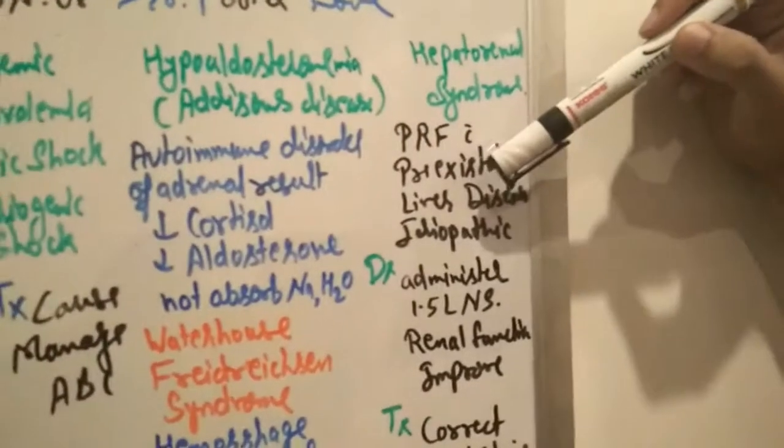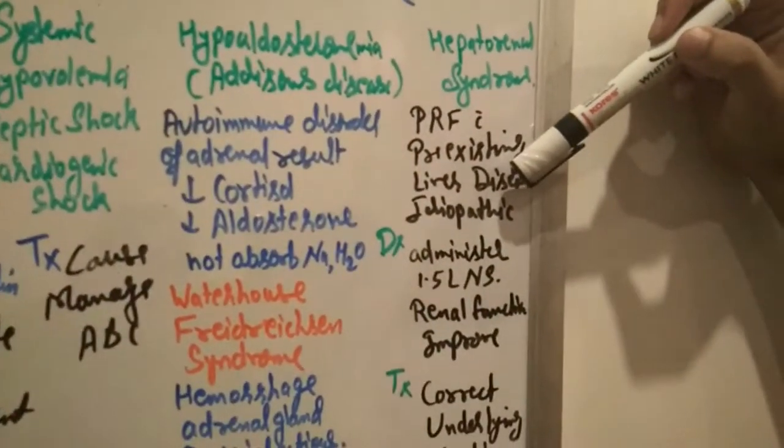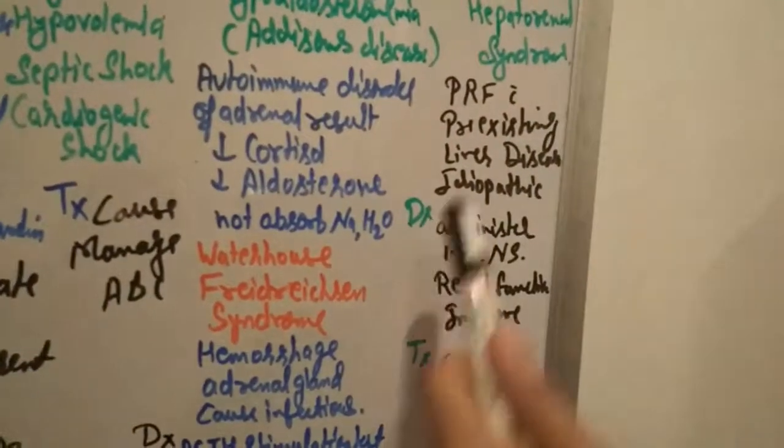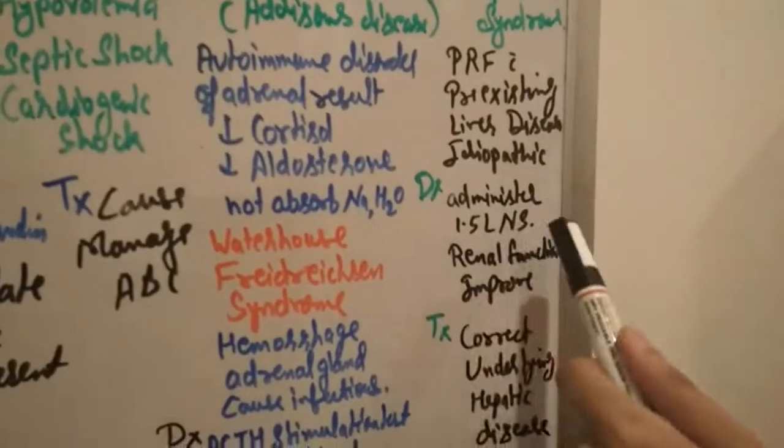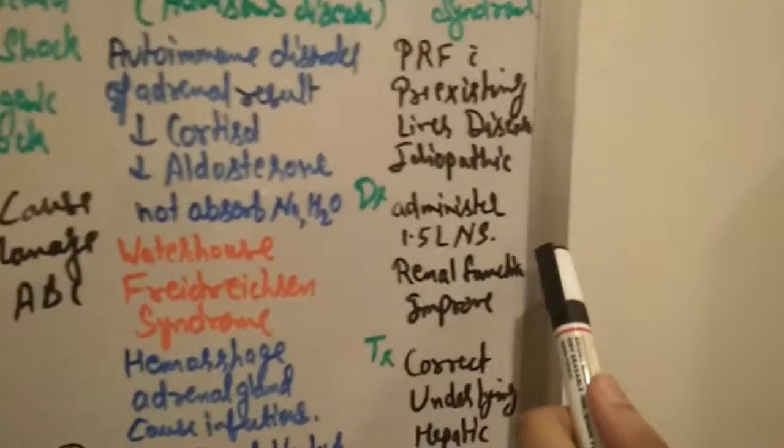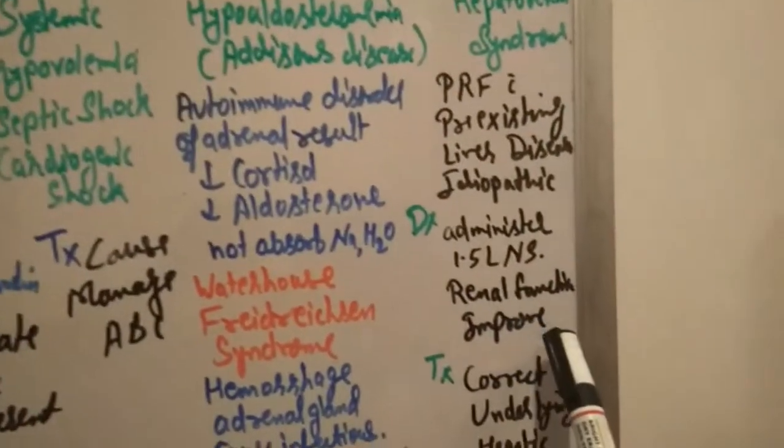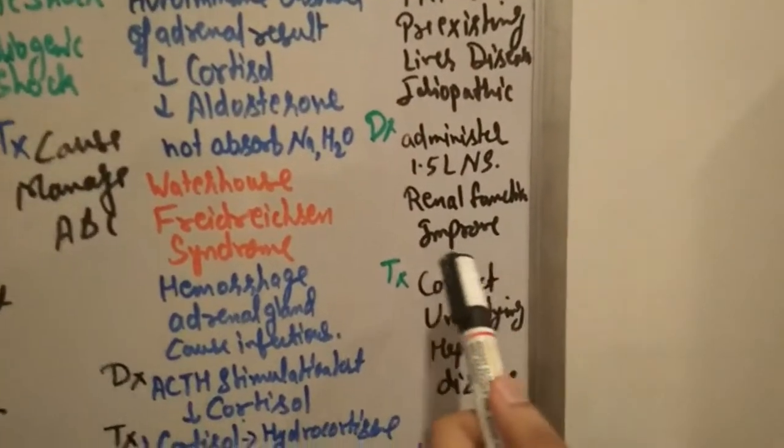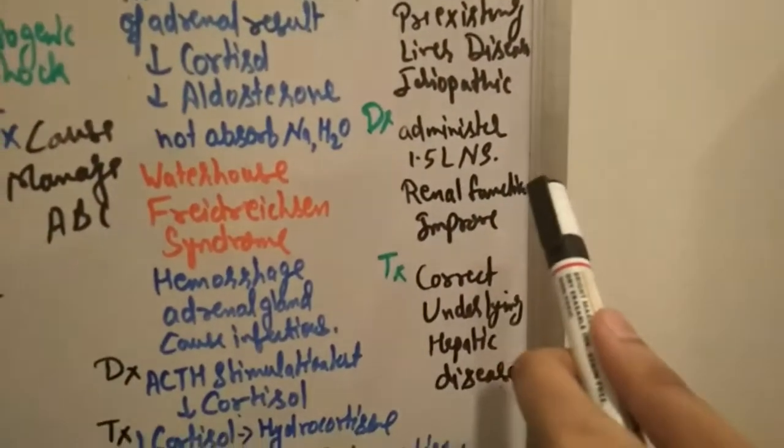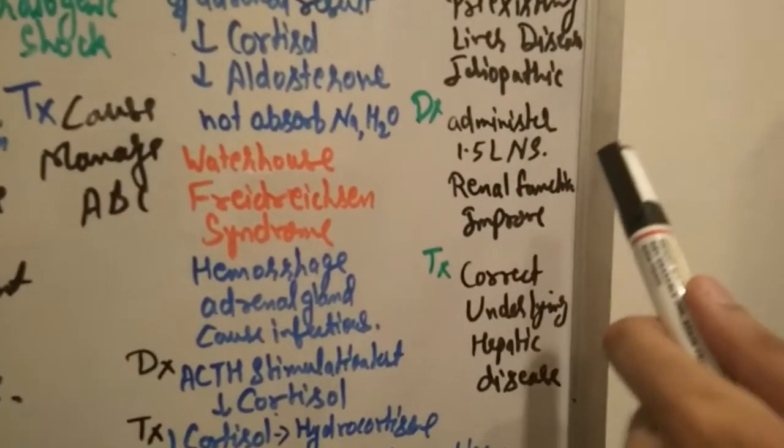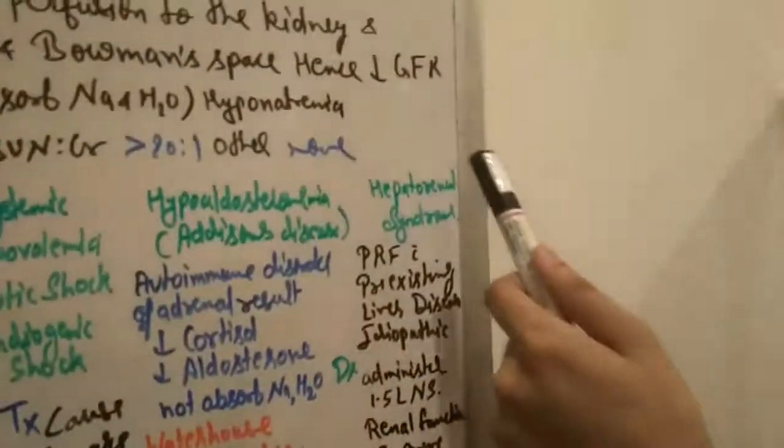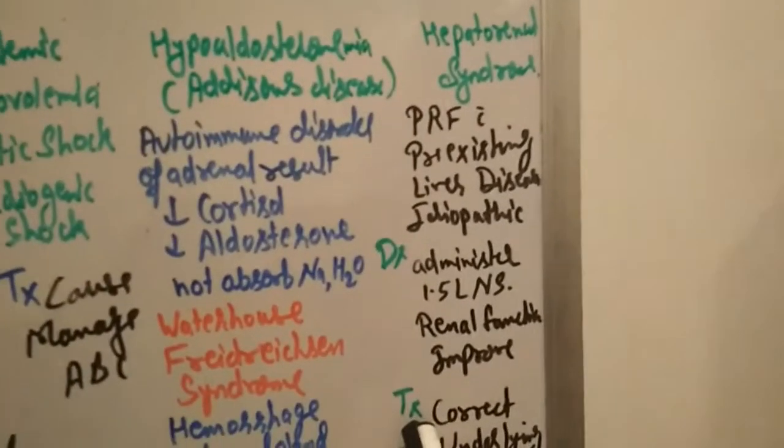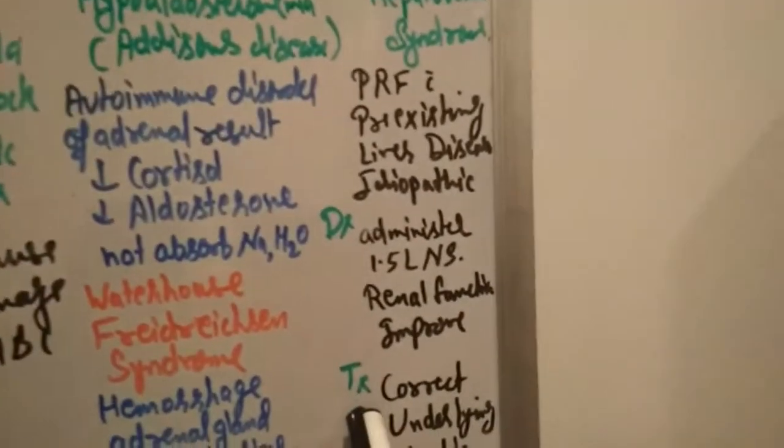With existing liver disease it itself causes pre-renal failure. How to diagnose hepatorenal syndrome? Administer 1.5 liters normal saline and see if the renal function improves. Output increases, urine comes faster which shows there is the cause behind it, known as hepatorenal syndrome. And how to treat this situation? How to improve pre-renal failure here? You have to correct the underlying hepatic disease.